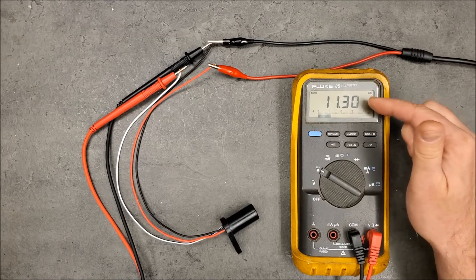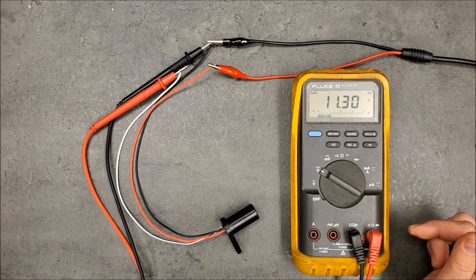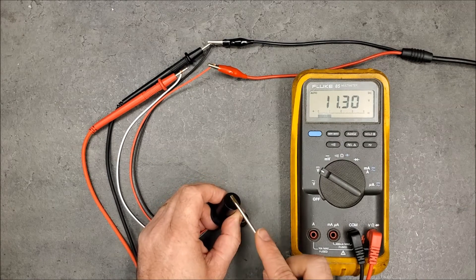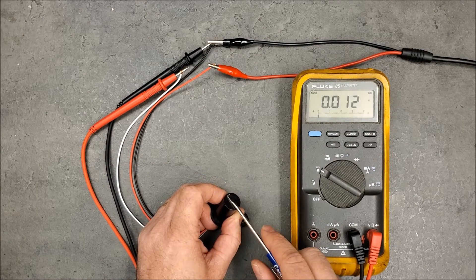As you can see, it's reading just under our input voltage of 12 volts, and when we put any ferrous object in front of the sensor, the voltage will drop.